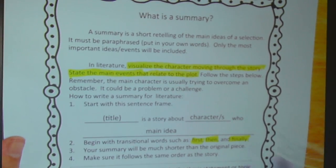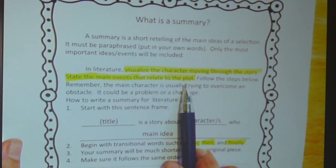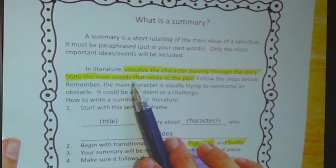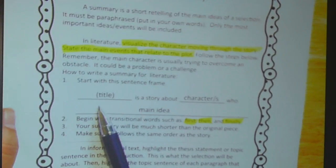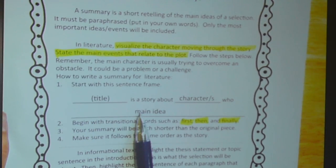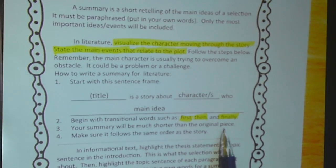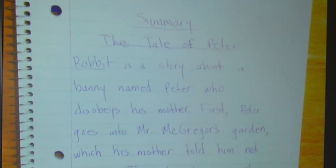Now let's go back and review the summary. Visualize the character moving through the story — we did that. State the main events that relate to the plot. Remember boys and girls, when it said he went through the garden and ate carrots, lettuce, and strawberries, we turned those three events into one single event by saying he went into the garden and ate fruits and vegetables. We used our sentence starter with the main idea, we used transitional words, our summary is much shorter than the original piece, and we followed the same order as the story. So let's go back and read our summary.